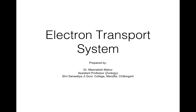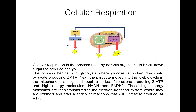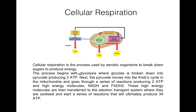Today I will discuss the electron transport system. As I explained earlier, cellular respiration is the process used by aerobic organisms to break down sugars to produce energy. This process begins with glycolysis where glucose is broken down into pyruvate and produces 2 ATP. Next, the pyruvate moves into the Krebs cycle in the mitochondria, goes through a series of reactions, and produces 2 ATP and high energy molecules NADH and FADH2. These high energy molecules are then transferred to the electron transport system where they are oxidized and start a series of reactions that will ultimately produce 34 ATP.